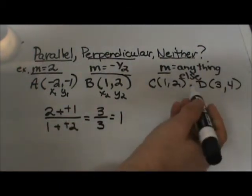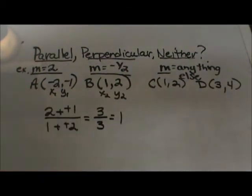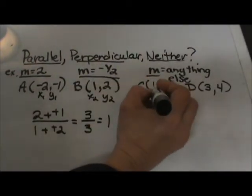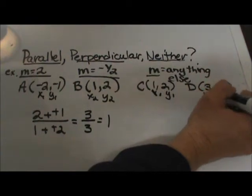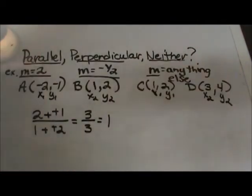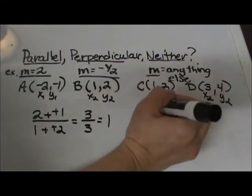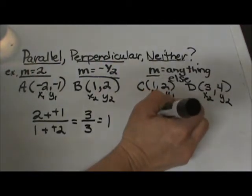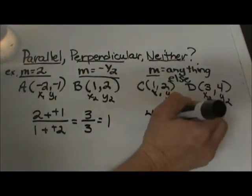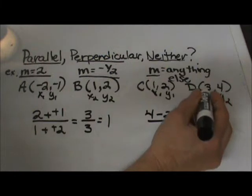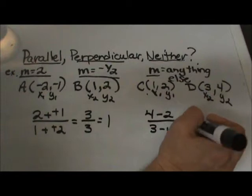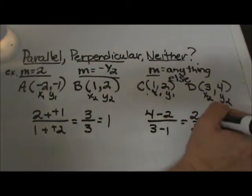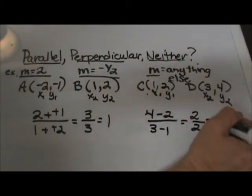Let's take the same equation with our two other points. So now we're going to label these x1, y1, x2, y2 and do the same thing. So I'm going to take the difference of my y's, so 4 minus 2 over 3 minus 1, and I'm going to get a positive 2 over a positive 2, which reduces down to 1.